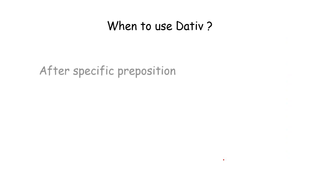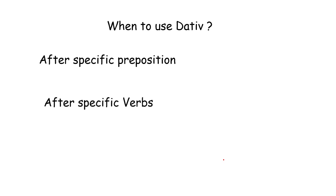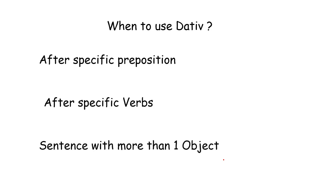When to use dative: after specific prepositions — there are certain prepositions called dative prepositions, and after those we use only dative. After specific verbs — some verbs are called dative verbs, and after those we also use only dative. And in sentences with more than one object, if there are two objects, like one is a person and the other is a thing.